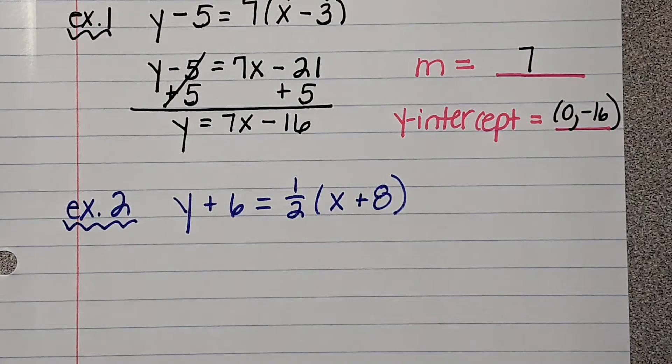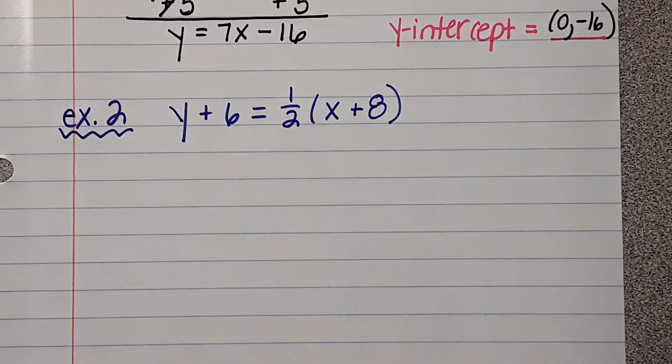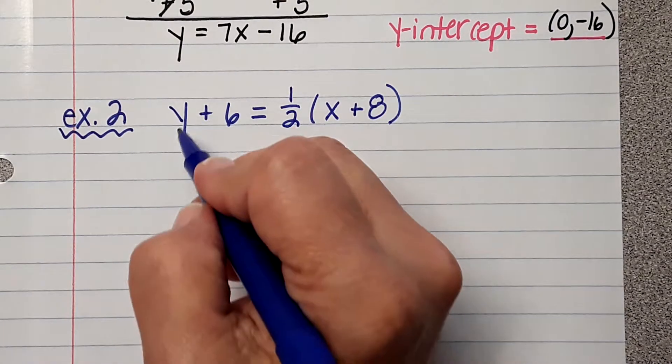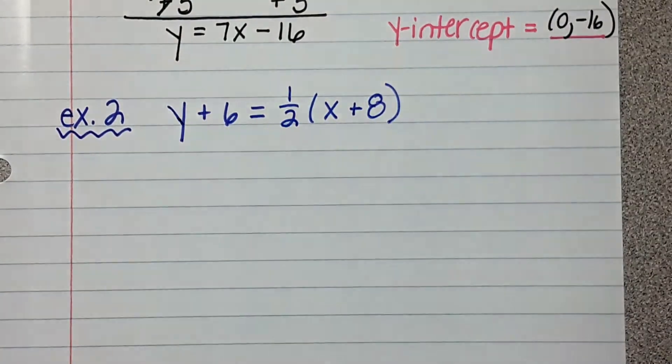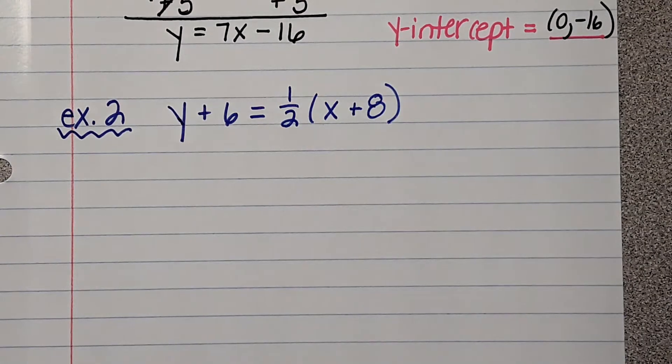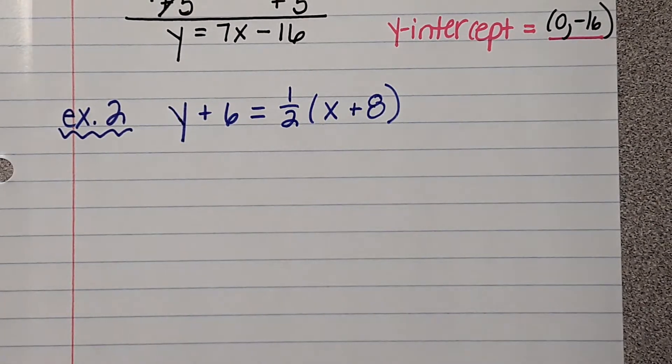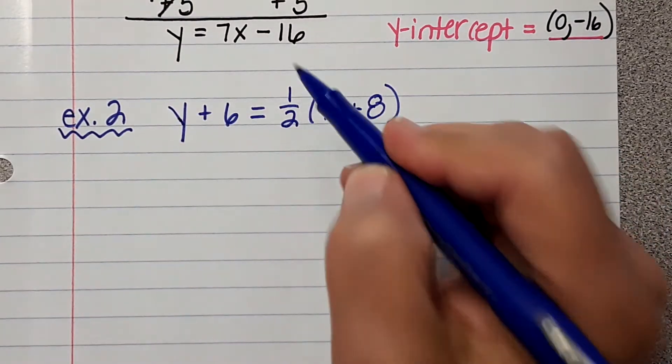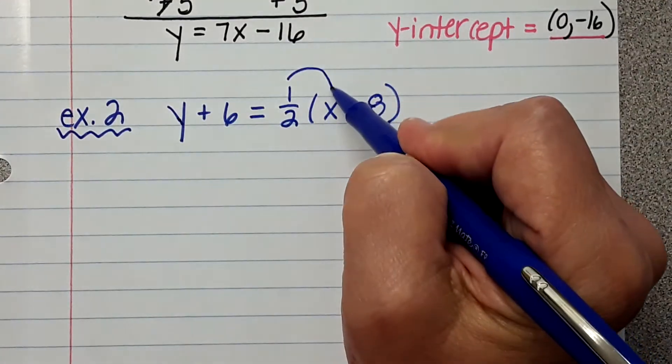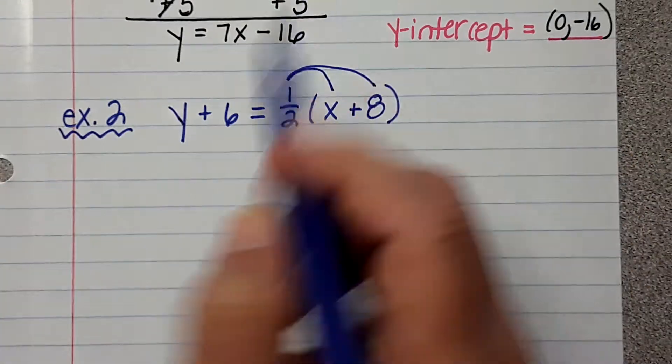Okay, so we have Y plus 6 equals 1 half X plus 8. So, this is point slope form. We're going to write it in slope intercept form. To do that, the first thing we need to do is distribute the 1 half times the X and the 1 half times the 8.